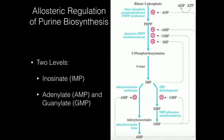So AMP inhibits its own synthesis. GMP is also going to do a similar thing — GMP can come back and inhibit IMP dehydrogenase, inhibiting its own synthesis. But just like before, GMP is not going to inhibit adenylosuccinate synthetase, because just because we have high GMP does not mean we have high AMP. GMP only inhibits its own synthesis — if we already have GMP, turn off GMP synthesis, but don't necessarily turn off AMP synthesis.